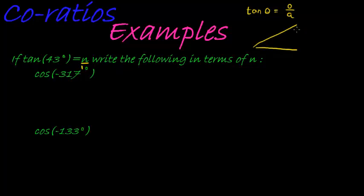So here's my opposite. The angle is 43. It doesn't really matter what the angle is, it could have been anything. Okay, opposite is n and adjacent is 1.